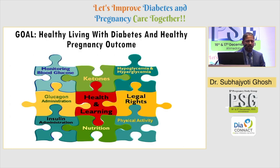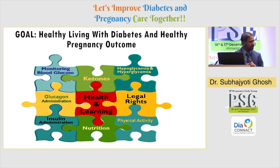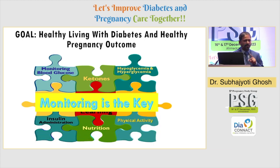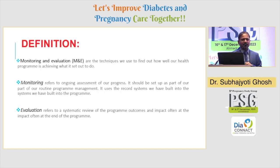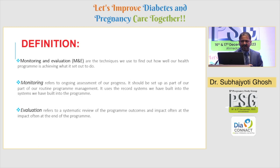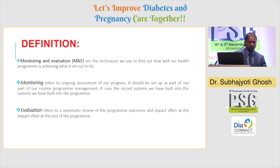So how do we prevent all this? The goal is healthy living with diabetes and healthy pregnancy outcomes, and monitoring is the key. The definition says that monitoring and evaluation, even though we combine them together, are the techniques we use to find out how well our health program is achieving what it set out to do.